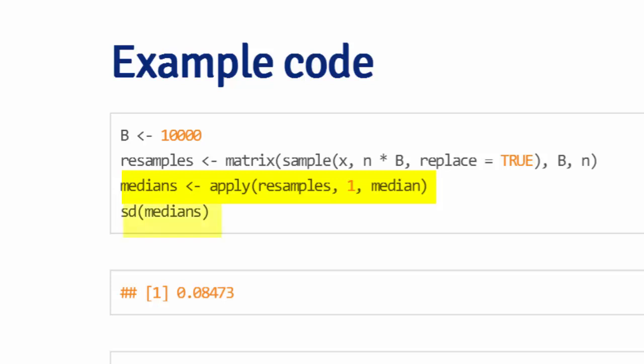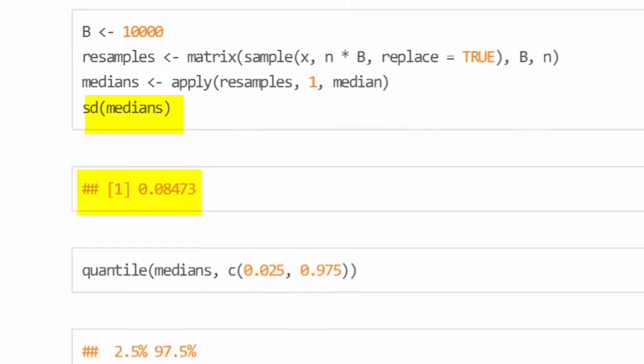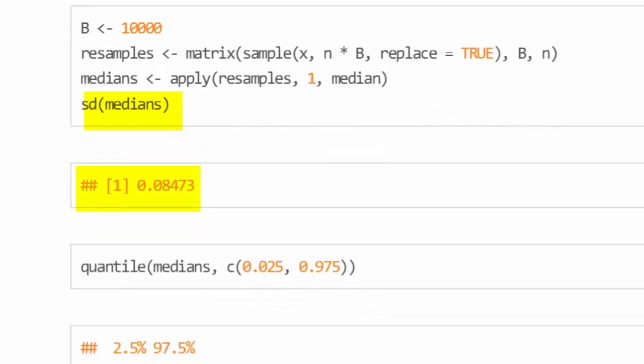So I'm going to go along the rows in the next line and take the median for each row. When I take my standard deviation of my medians, I get 0.08473. This is an estimated standard error of the median.